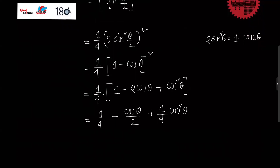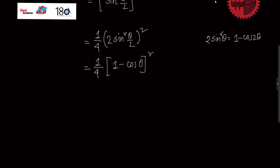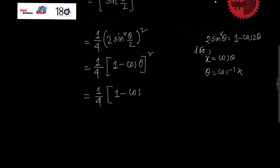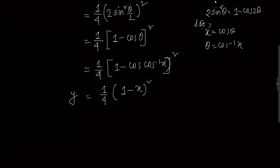I am going to write this one by 4 minus cos theta by 2 plus 1 by 4 cos squared theta. So we get 1 by 4 minus cos theta by 2 plus cos squared theta by 4, with cos inverse x in the expression.